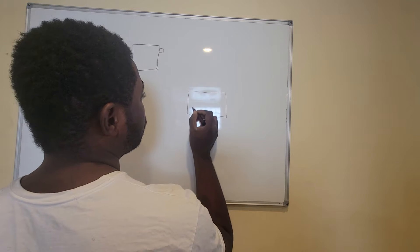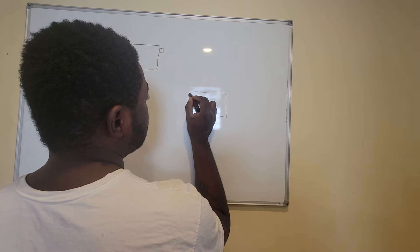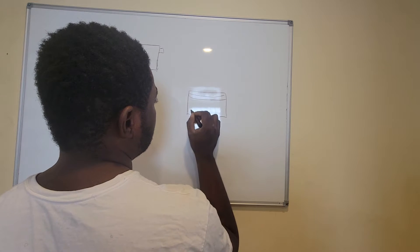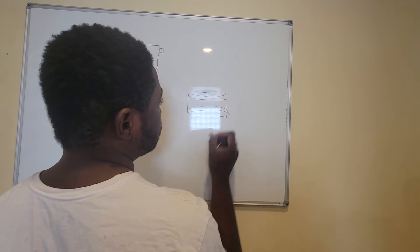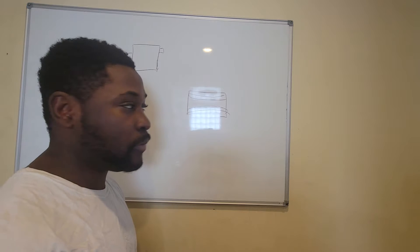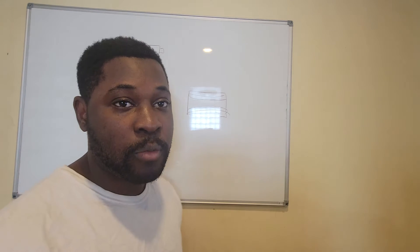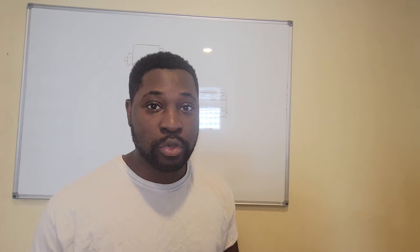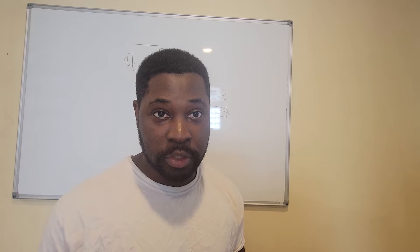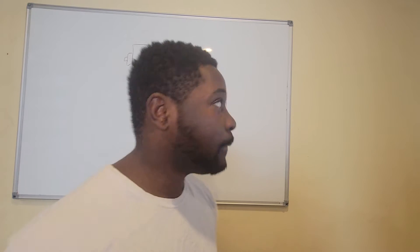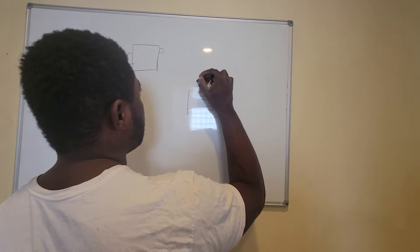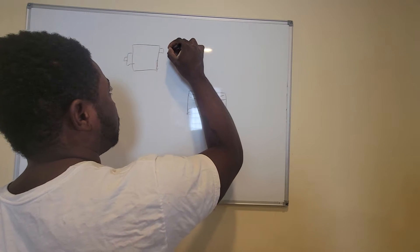What we have to do is put a transformer in there. The transformer is going to solve that problem when it ups the voltage. So now we're going to connect that transformer to the magnetron.